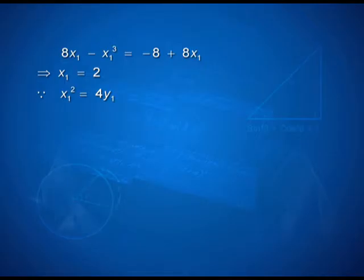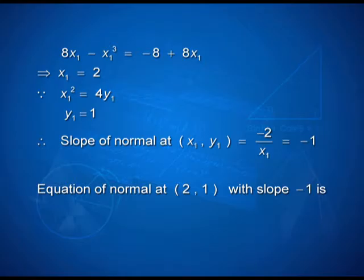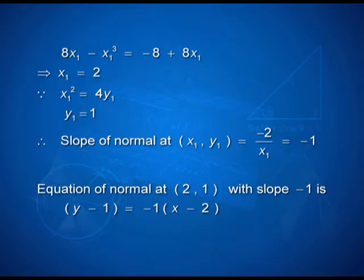Cross-multiplying and simplifying gives x₁ = 2. Using x₁² = 4y₁, we get y₁ = 1. Therefore, the point at which the normal is constructed has coordinates (2, 1). The slope of the normal, which was −2/x₁, takes the value −1. So I have the point and the slope, and the equation of the normal is y − 1 = −1(x − 2). Simplifying and expressing in standard form gives the equation of the normal as x + y = 3.